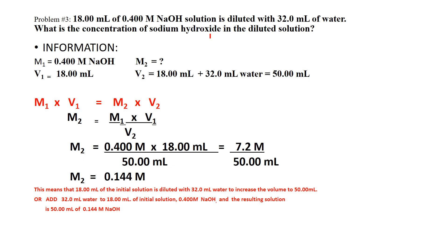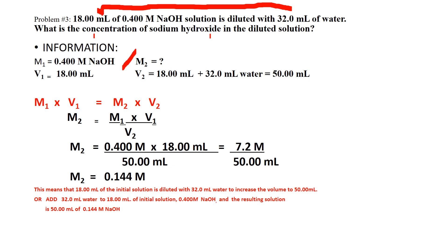Problem 3: 18 mL of 0.4 molar NaOH solution is diluted with 32 mL of water. This amount of water is added to 18 mL of 0.4 molar NaOH, and after adding it the problem asks: what is the resulting concentration M2? M1 is 0.4 molar and V1 is 18 mL; M2 is not given.